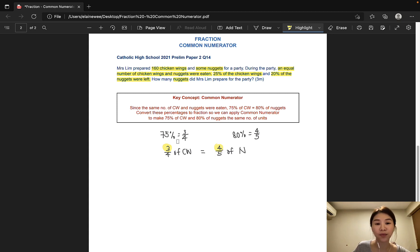So 3 units of the chicken wings and 4 units of the nuggets are actually the same number. However, it is not reflected in the number of units, right? So, our job is to make these two numbers the same. Therefore, common numerator.